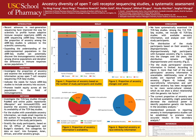According to Figure 1, the proportion of ancestry of study participants in T-cell receptor sequencing studies is mainly European. If we look at the proportion of ancestry in the reported studies, more than half of the studies are conducted under European ancestry. Accordingly, the proportion of ancestry in T-cell receptor sequencing studies is highly disproportionate.